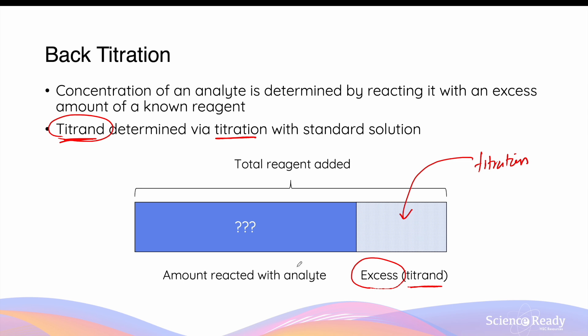The reason why this is called back titration is because we are still using titration, but rather working backwards to find out the quantity of this unknown substance.